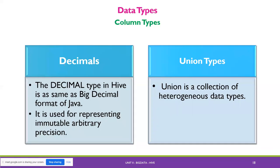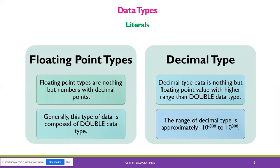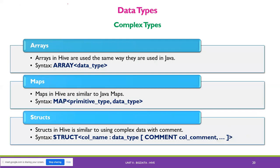The decimal type in Hive is the same as the BigDecimal format in Java. Next, union type is a collection of heterogeneous data types. The literal data type has two sub-types: floating point - numbers with a decimal point, generally composed of double data type - and decimal type, which is a floating point value with higher range than double. The range of decimal type is approximately minus 10 to the power of minus 308 to 10 to the power of 308. The fourth type is complex type, with three sub-types: arrays, maps, and structs.